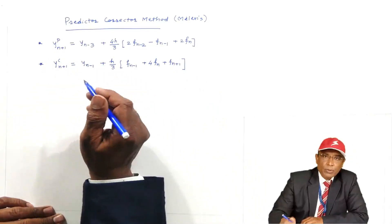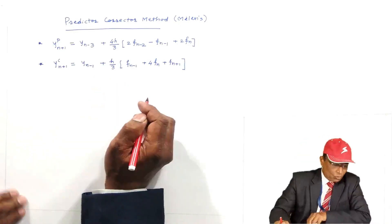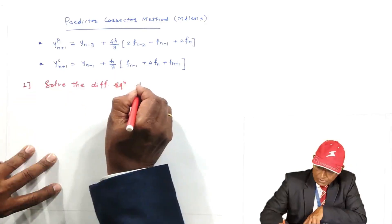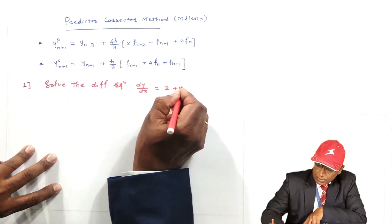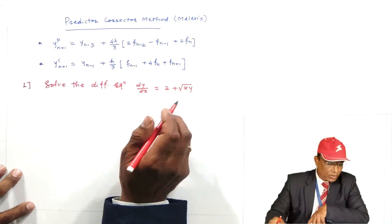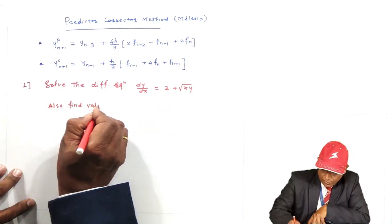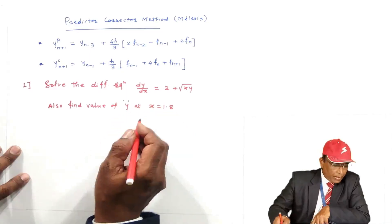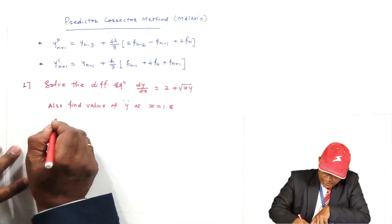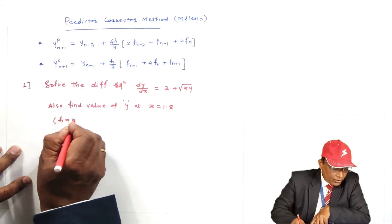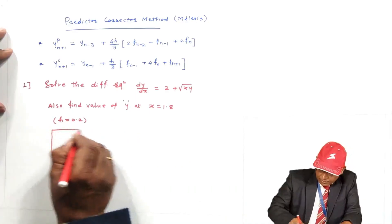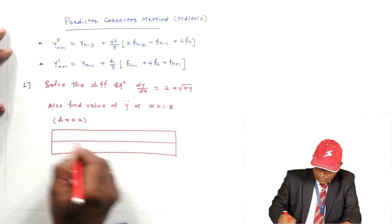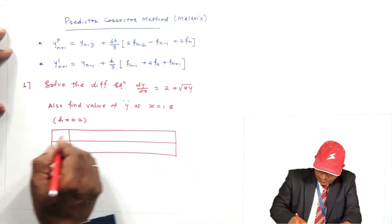We are going to solve a problem on the Predictor-Corrector method directly. The question is: solve the differential equation dy/dx = 2 + √(xy). Find the value of Y at x = 1.8 by the Predictor-Corrector method, where h = 0.2. The tabular values are given to you.